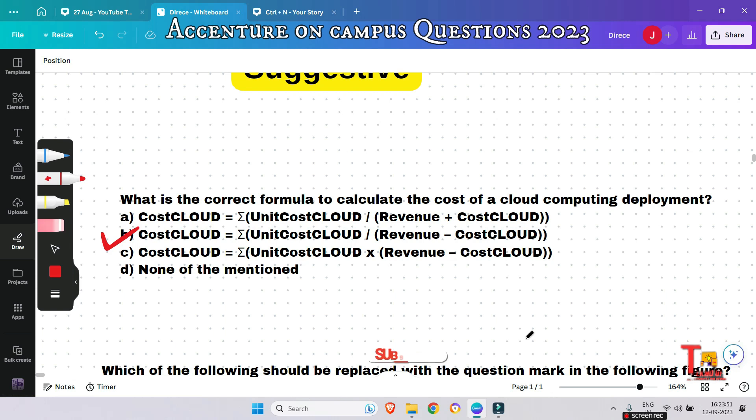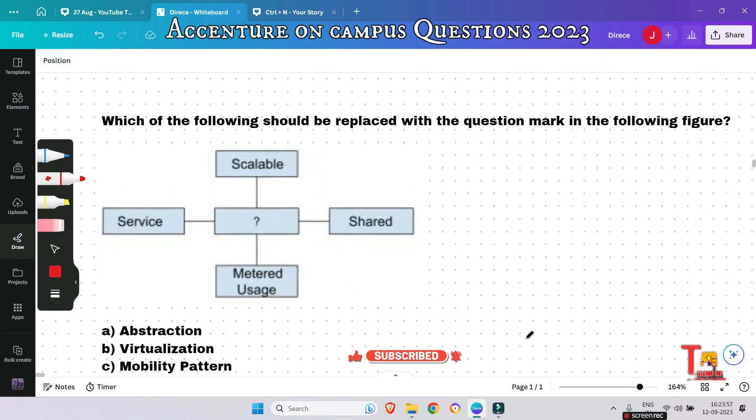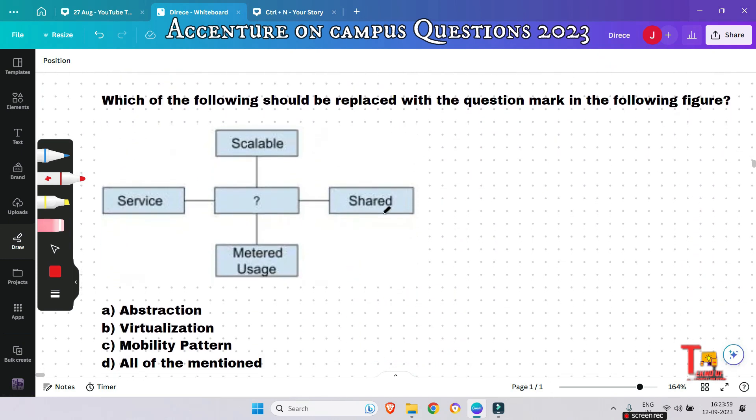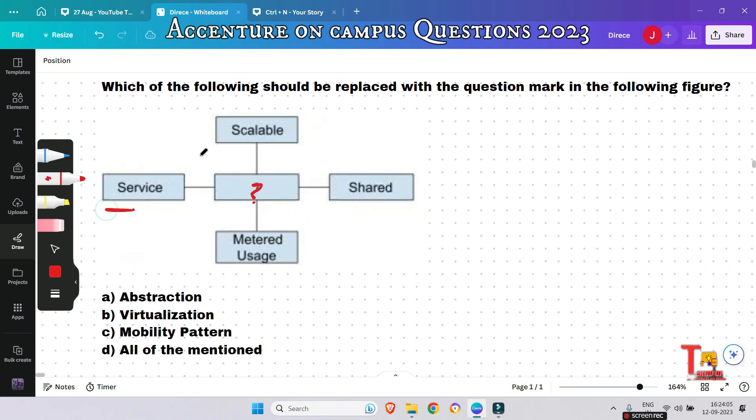The next question is: Which of the following should be replaced with the question mark in the following figure? What should be best suited here? Actually, Service, Scalable, Shared, and Metered Usage - these are the key attributes of cloud computing. And the fifth attribute is Virtualization, which is the key enabler of these four key attributes.